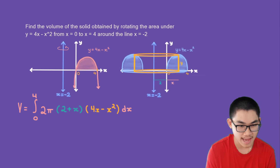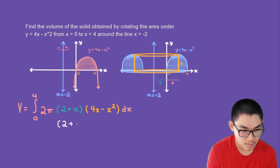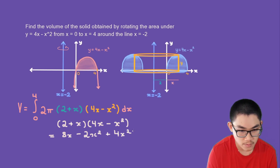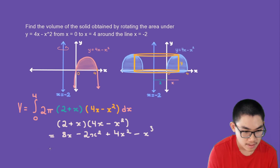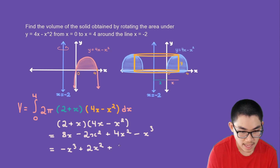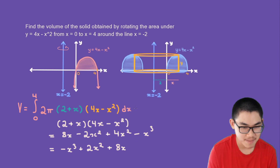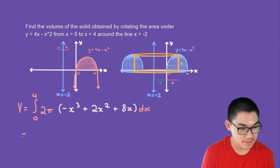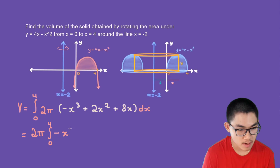We compute (2 plus x)(4x minus x squared), which expands to 8x minus 2x squared plus 4x squared minus x cubed. This simplifies to negative x cubed plus 2x squared plus 8x. Pulling 2π outside, we get 2π times the integral from 0 to 4 of negative x cubed plus 2x squared plus 8x, dx.